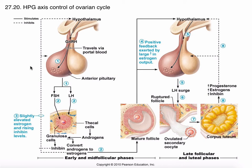Androgens also feed back, though it's not indicated on this picture. Another thing the granulosa cells do with the androgens they receive is convert them to estrogens. There are actually three forms of estrogens: estradiol, which is the most potent and what people usually mean when they say estrogen; estrone; and estriol. All three forms are present in both men's and women's bodies, but estradiol is the most potent.